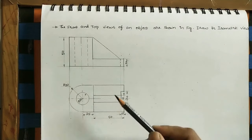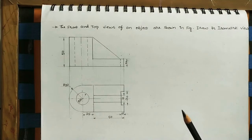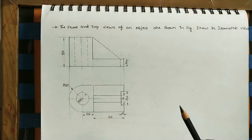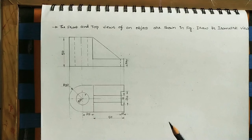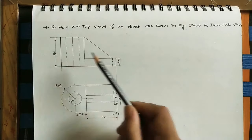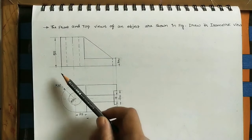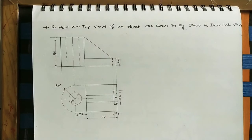Since the front view is given first, the position is first angle projection. We have two methods: first angle projection and third angle projection. Our given diagram is according to first angle projection. If you want to know what first angle projection and third angle projection are, we have a separate video — please check the link in the description box.